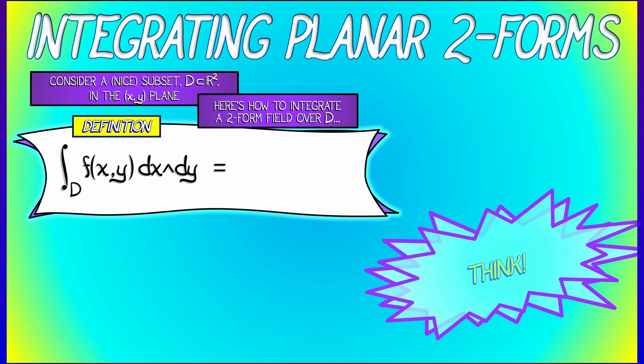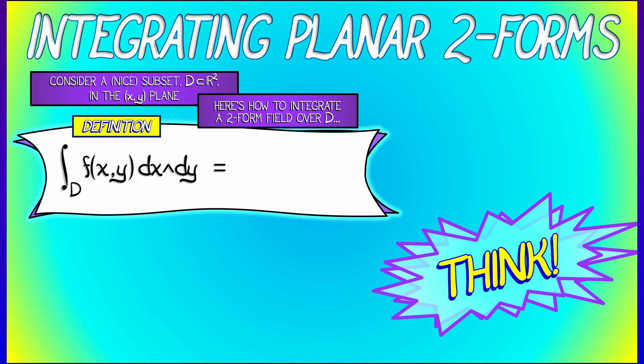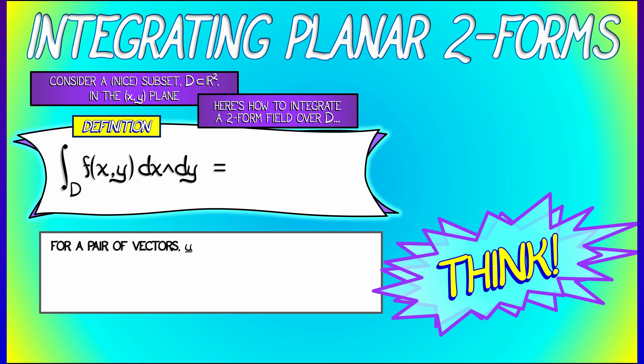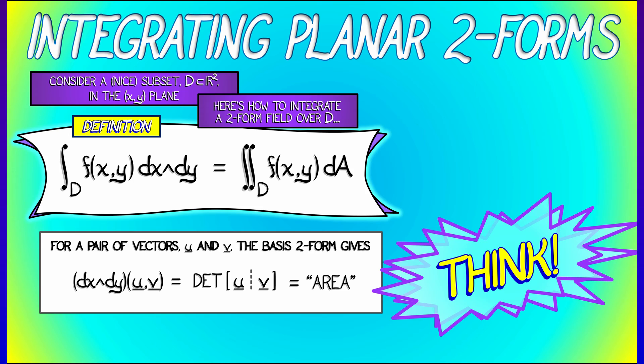There's really only one reasonable thing that we could do. If we think about that basis two-form, dX wedge dy, that is area in the plane. It is reminiscent of an area form. So let's take that scalar field, f, out in front and integrate that with respect to area over this domain D using the standard double integral for that.